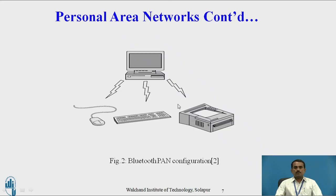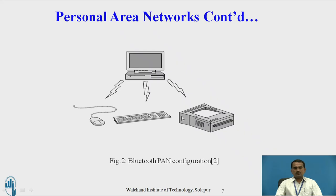This is an example Bluetooth PAN configuration. Here is one device, and these are other devices: a monitor, keyboard, mouse, and CPU. These devices can be connected to the monitor if all the devices are within a particular range.